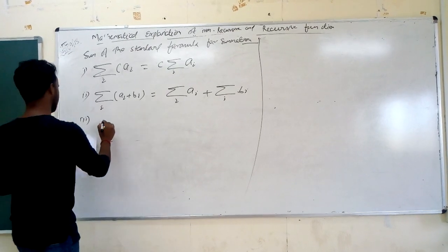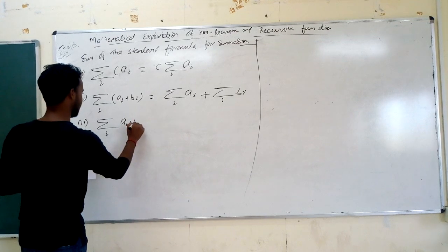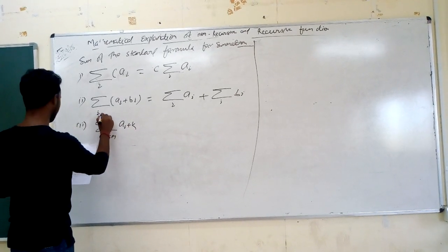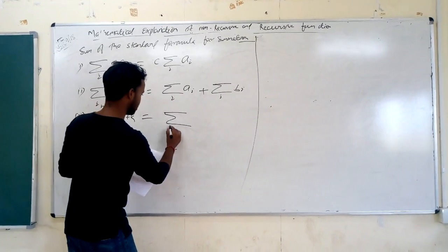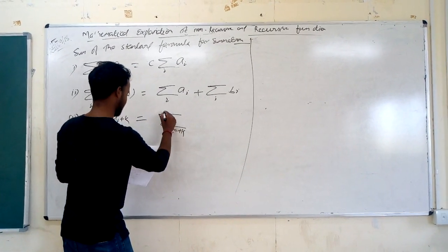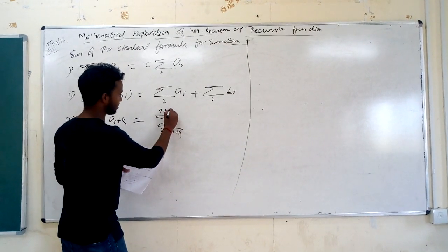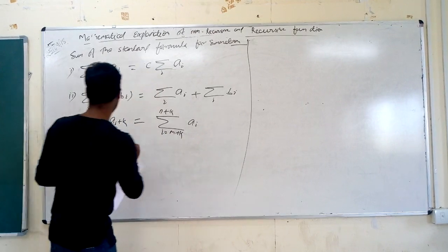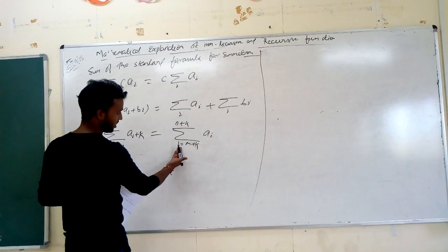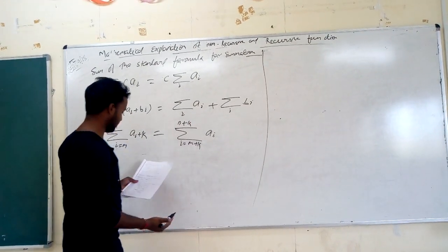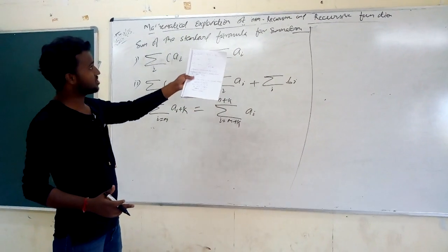The third formula is: summation of (A_i plus k) from i equals m to n, which equals the summation of A_i from i equals m plus k. These are the standard formulas we use during the mathematical explanation of non-recursive functions. We use these formulas to find the time complexity of any non-recursive function.